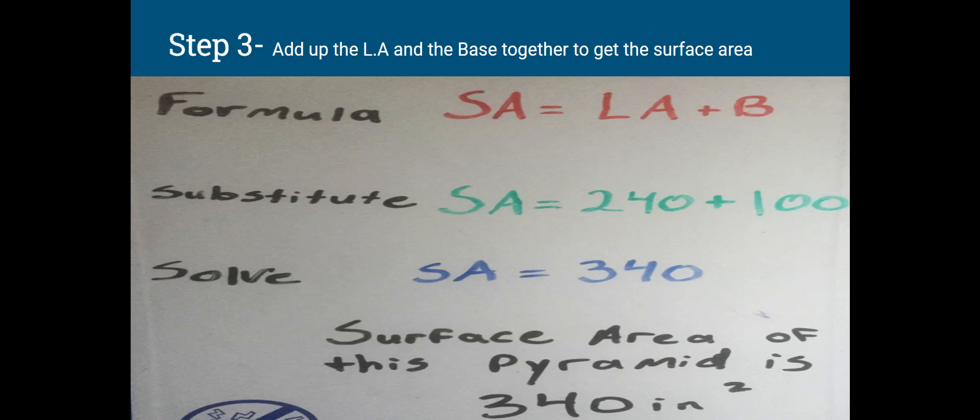Step three, last but not least. We then take the formula for surface area, which equals lateral area plus base. Then we substitute. We have 240 for the lateral area, 100 for the base. And then we solve: 240 plus 100 equals 340. So the surface area of this pyramid is 340 inches squared.